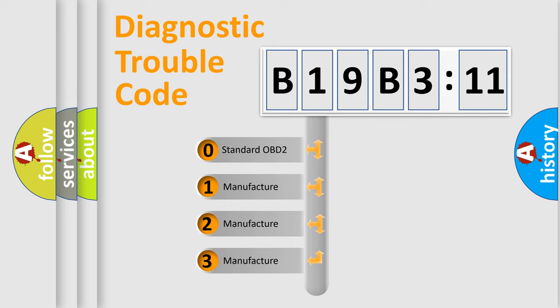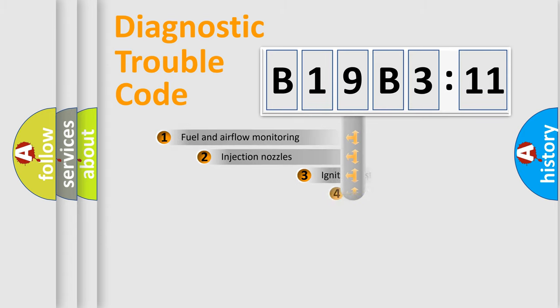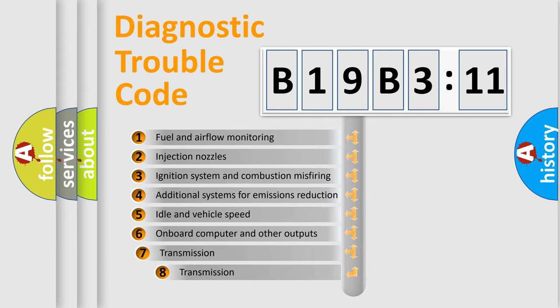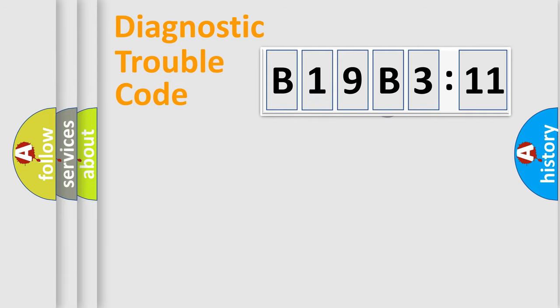If the second character is expressed as zero, it is a standardized error. In the case of numbers 1, 2, or 3, it is a manufacturer-specific error expression. The third character specifies a subset of errors. The distribution shown is valid only for the standardized DTC code. Only the last two characters define the specific fault of the group.